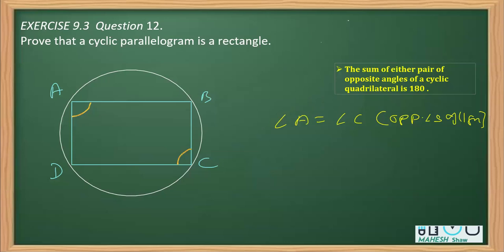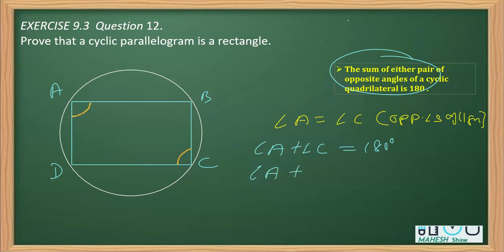We also know that ABCD is a cyclic quadrilateral, so we can write angle A plus angle C is equal to 180 degrees. Since A and C are equal, we replace C with A, giving us A plus A equals 180 degrees, that is twice angle A equals 180 degrees, which implies angle A equals 180 divided by 2, that is 90 degrees.